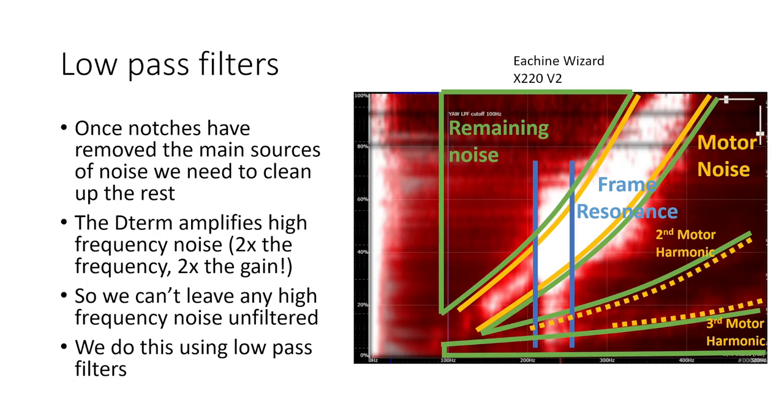Once the RPM filters and the dynamic notch have removed the main sources of noise we need to clean up the rest. Now the reason we need to do this is that the D term amplifies high frequency noise and the D term operates in such a way that if you have noise at twice the frequency the D term will amplify it twice as much and this means we cannot leave any high frequency noise unfiltered and we do this using low pass filters and the low pass filters clean up all the noise that's in this sort of green zone here that's not being taken care of by either the dynamic notch or the RPM filters.